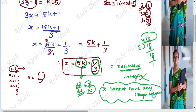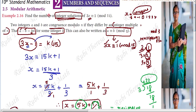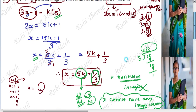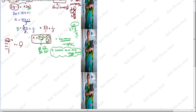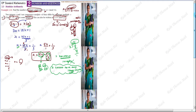Cannot have any integer solutions. So this is the conclusion: you will not have any integer solutions. Because the question asks us to find the number of integer solutions, and when applying the congruence concept the value of x comes out in terms of decimals as 1 by 3, the final answer will be a rational number. So there is no integer solution. This is your final answer.